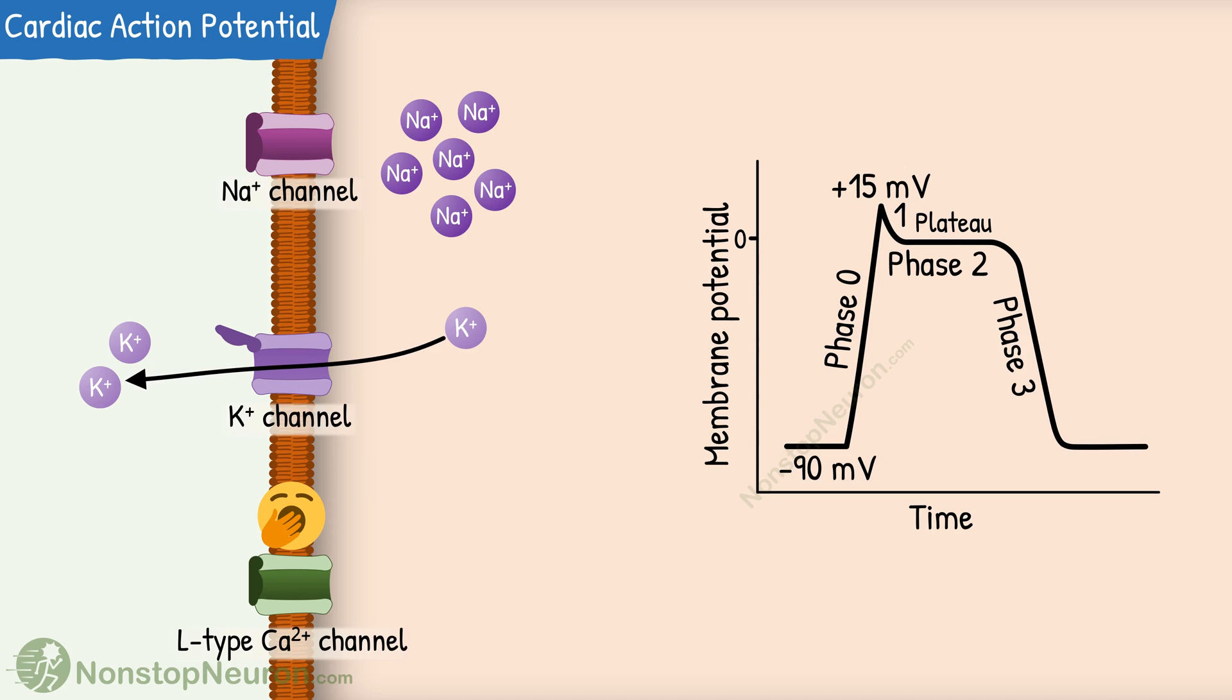Then of course, we have resting membrane potential till the next action potential. This is called phase 4. So this was the action potential in ventricular muscle.